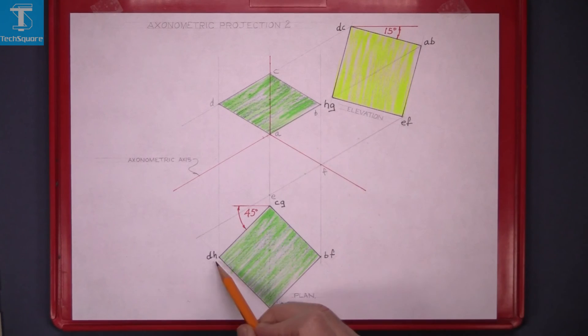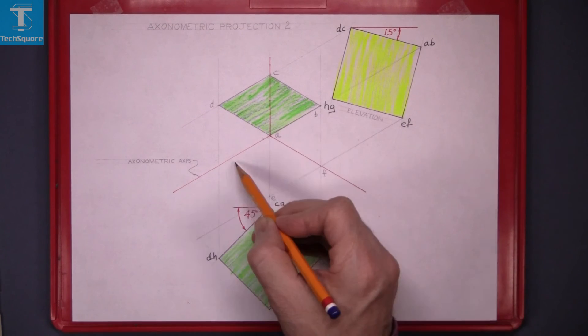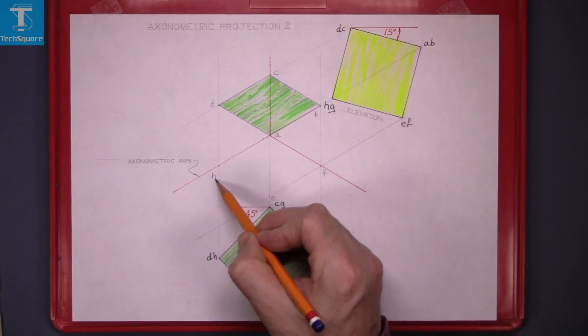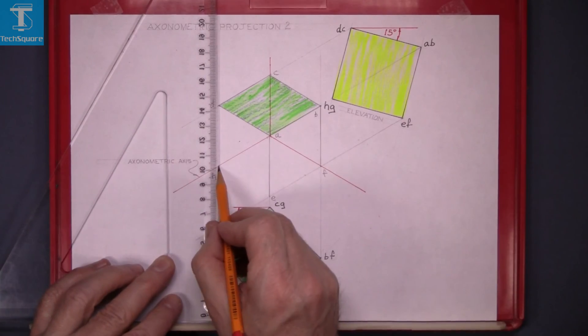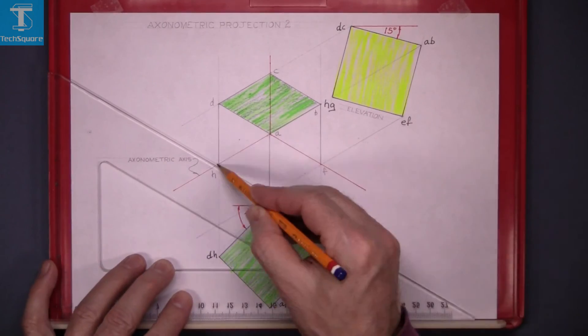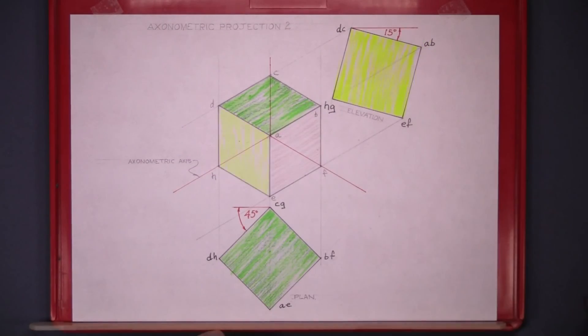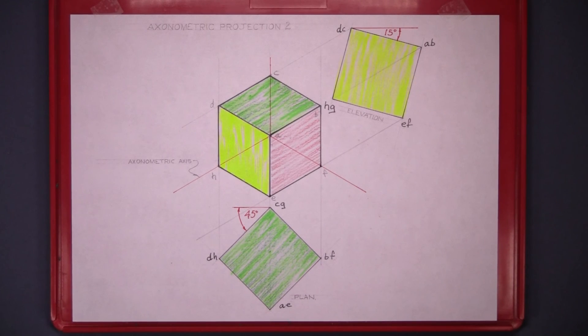Now point H gets you the far corner over here and that's all the points now. Line it in again and that's the cube complete with a little bit of colour added on to it.